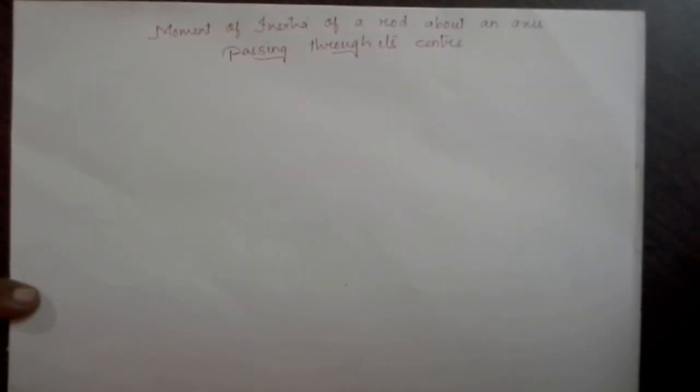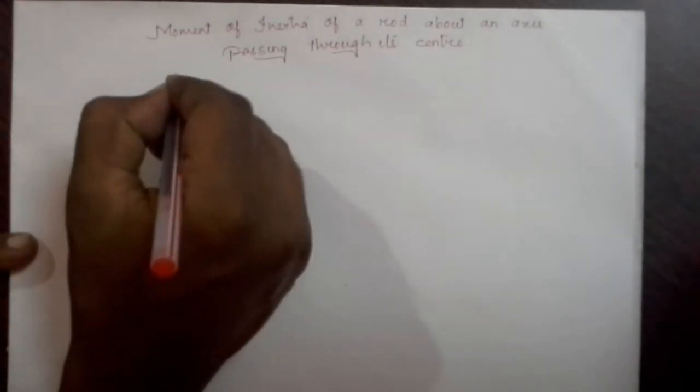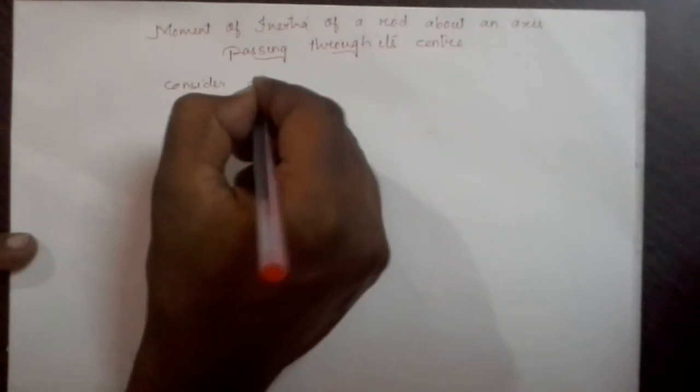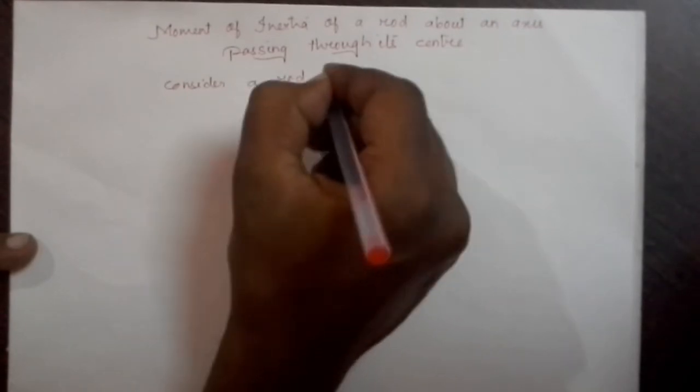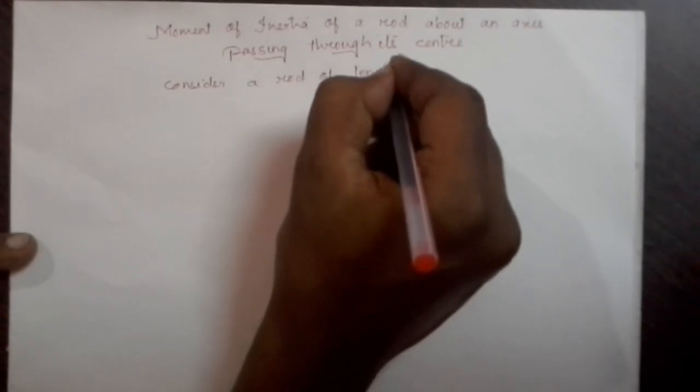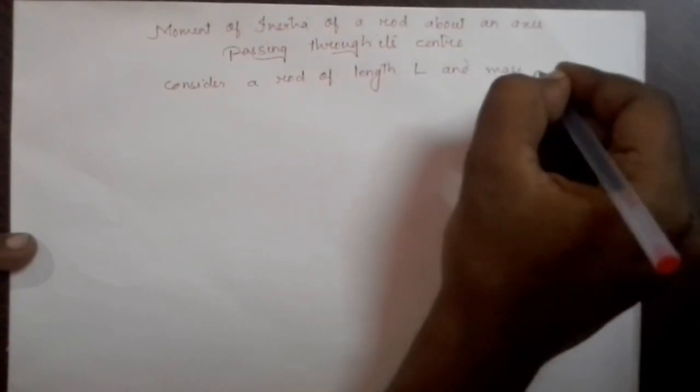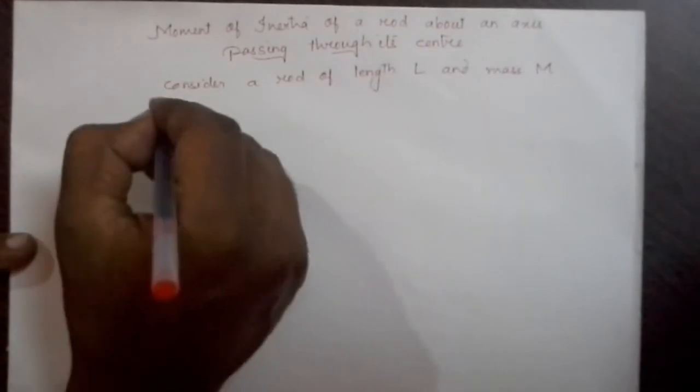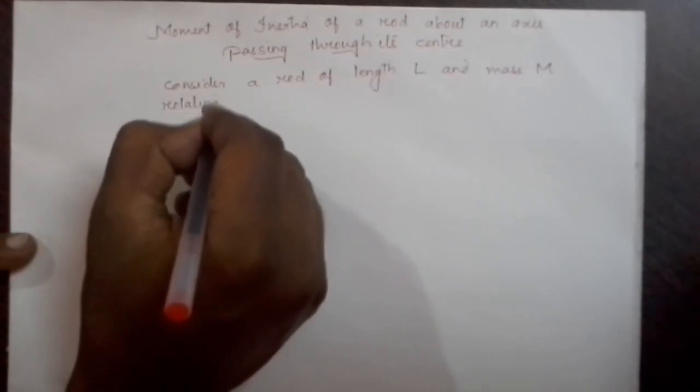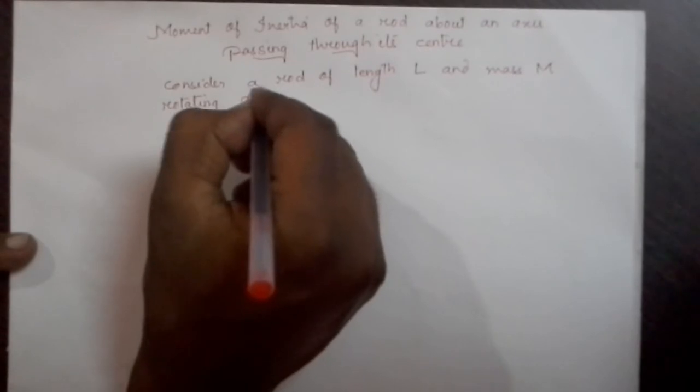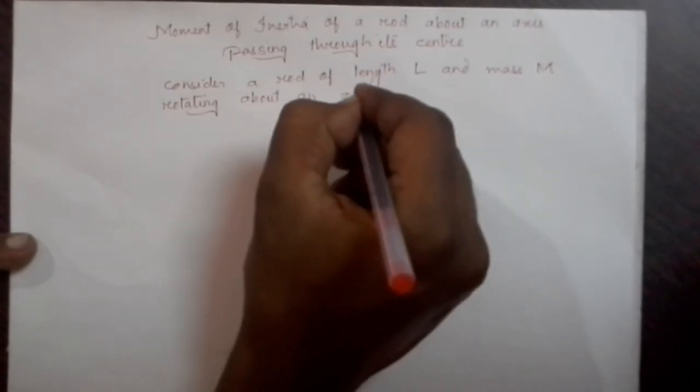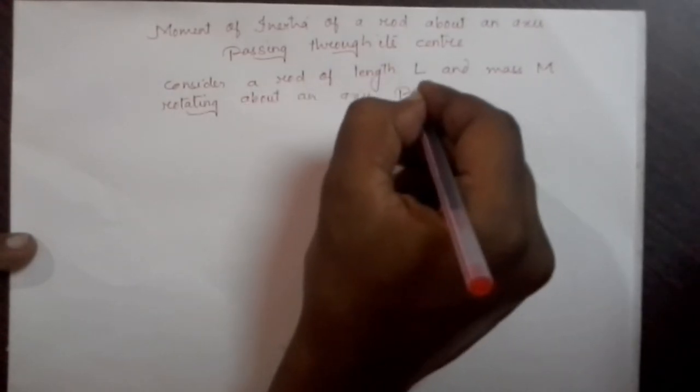Hello everyone, my name is Titus, and today we are going to derive an expression for the moment of inertia of a rod about an axis passing through its center. So let us consider a rod of length L and mass M rotating about an axis passing through its center.